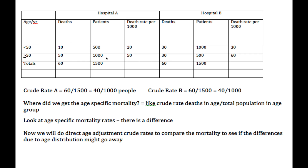We have deaths, patients, and then the death rate per 1,000. In these two hospitals, first we're going to look at the crude mortality — we take the number of deaths over the total number of patients, and we get a crude rate of 40 per 1,000. In Hospital B, it's also 60 over 1,500 for a crude rate of 40 per 1,000.